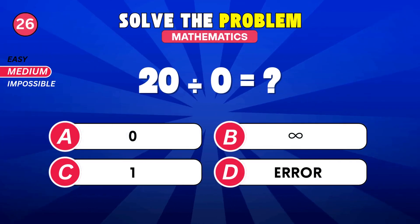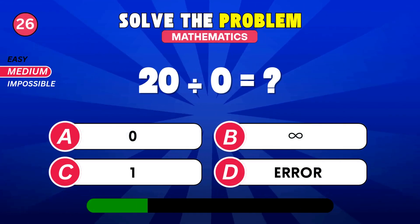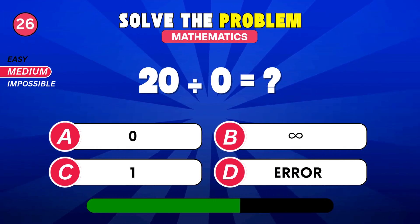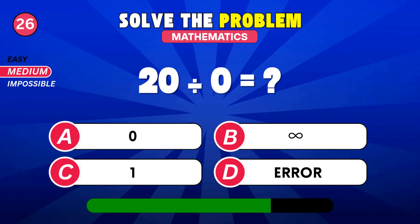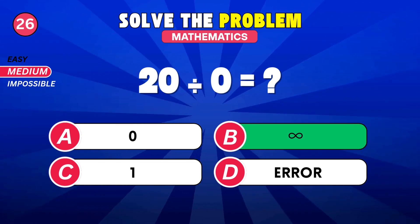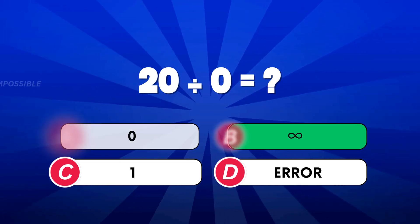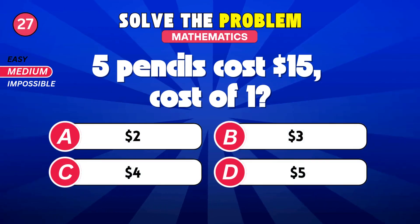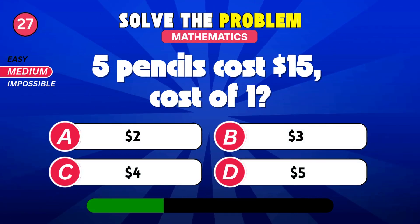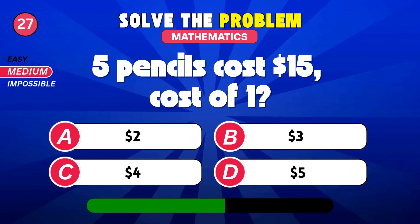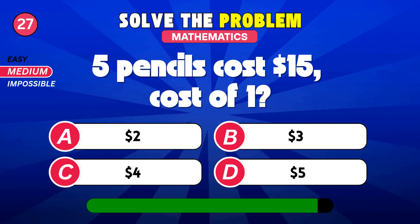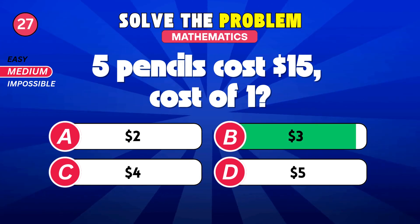20 divided by zero. Infinity. If five pencils cost $15, then what is the cost of one? $3.